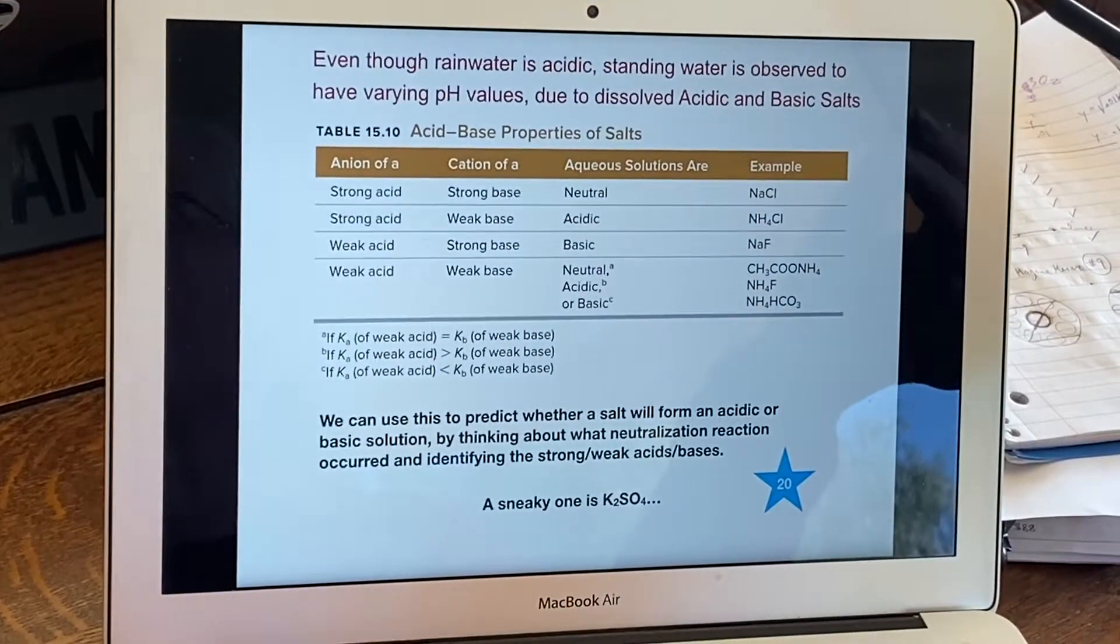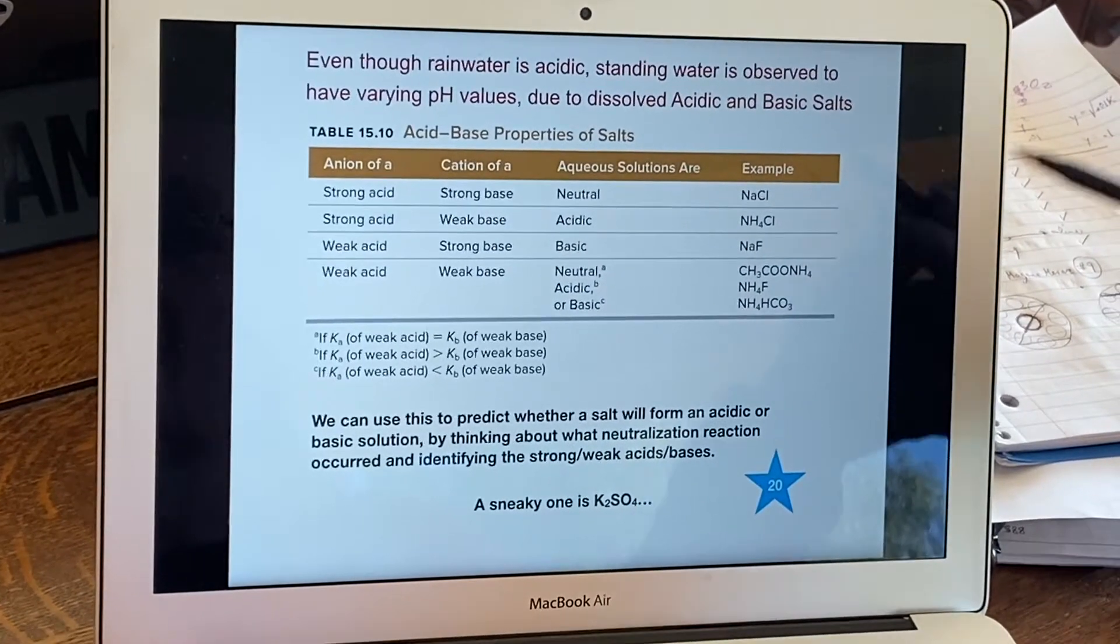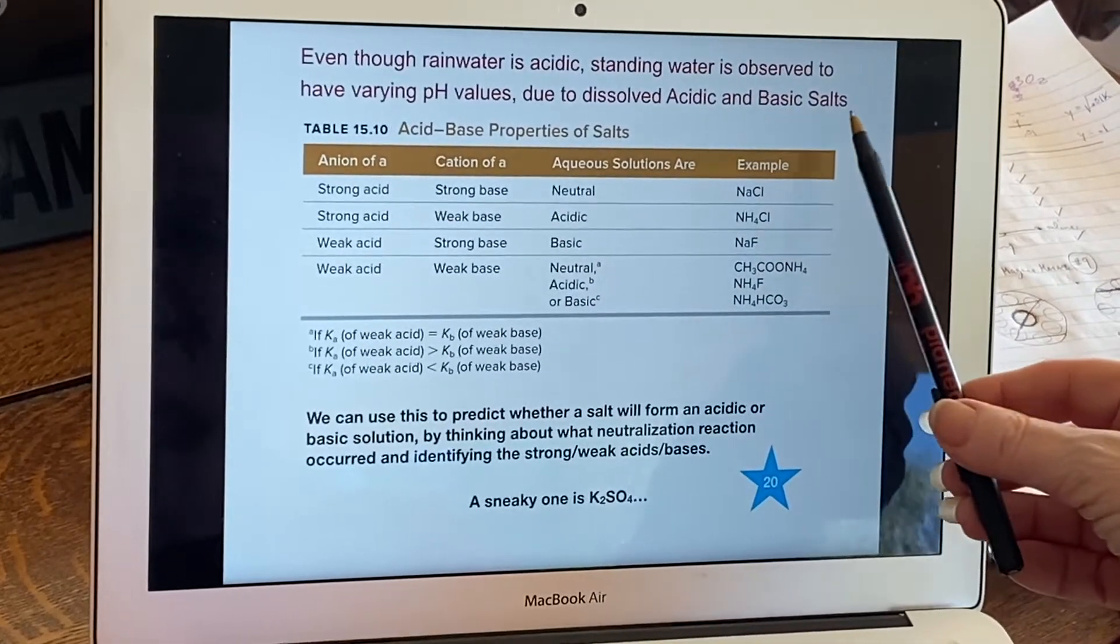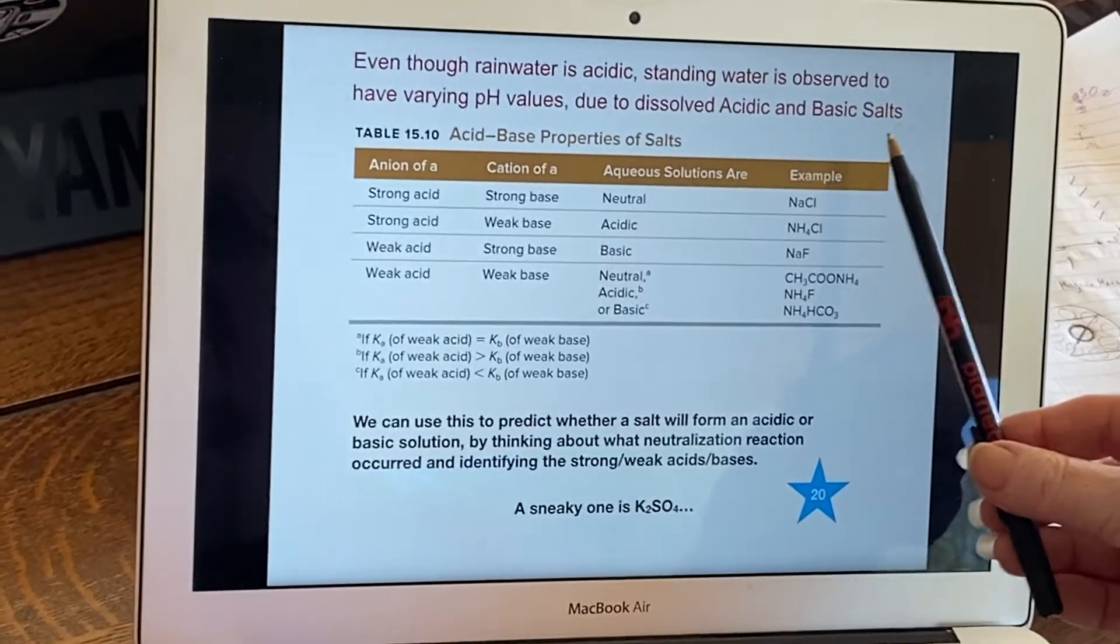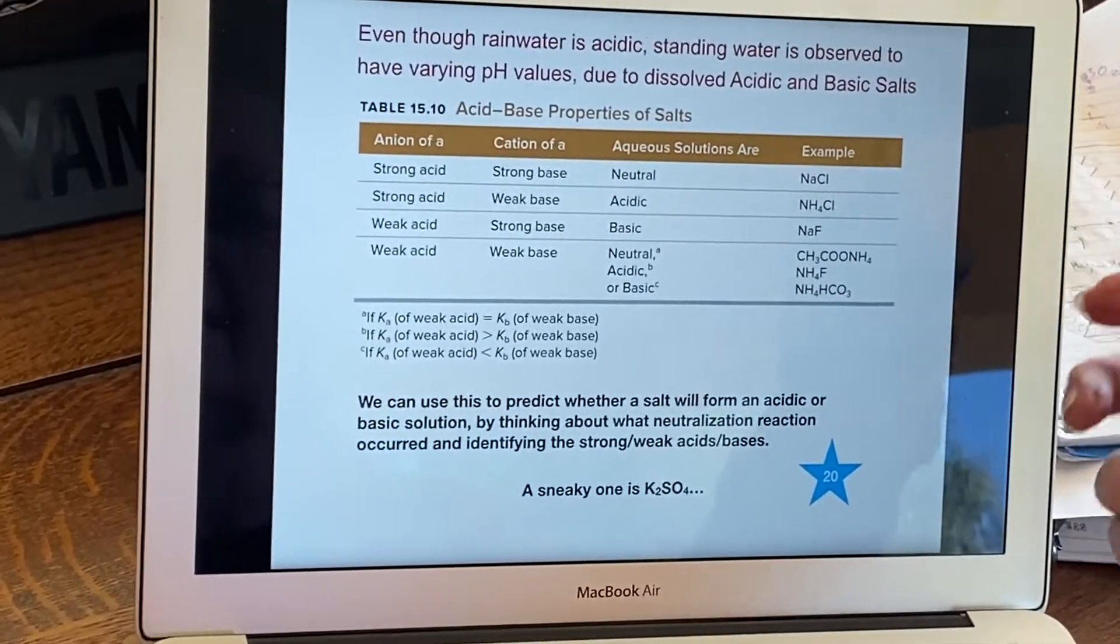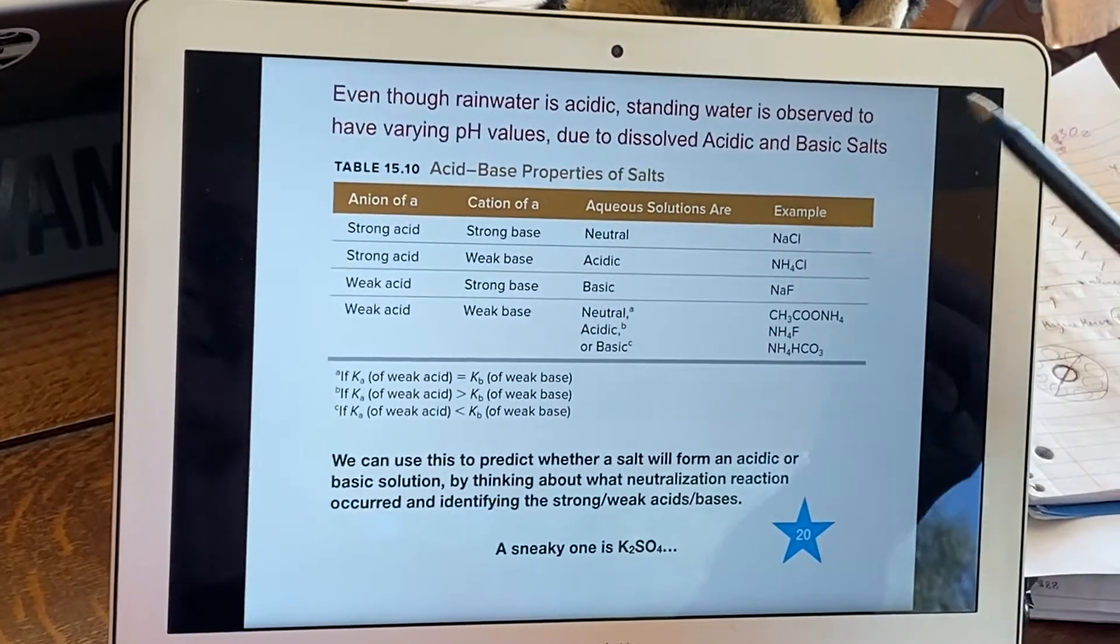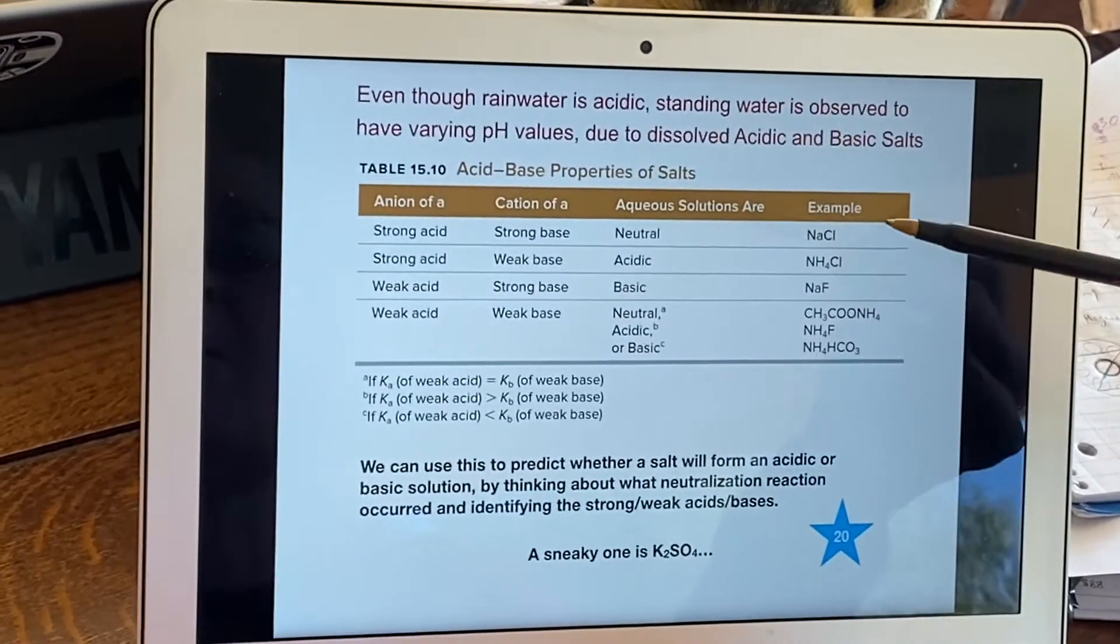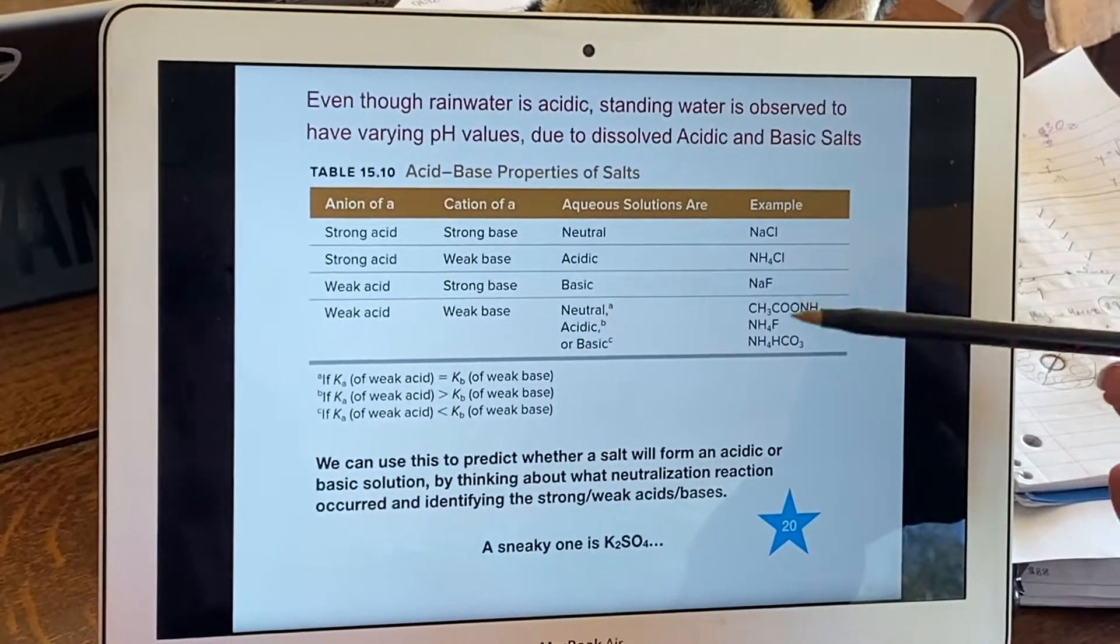Because once it's on the ground, it's getting involved with anything else that might dissolve in it. There are acidic and there are basic salts. We just think of salts as being a positive ion and a negative ion combining, but it turns out that it depends where those positive ions and negative ions came from that helps tell you what effect it will have on a solution once it is dissolved.